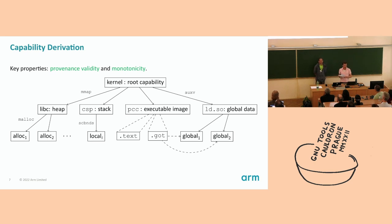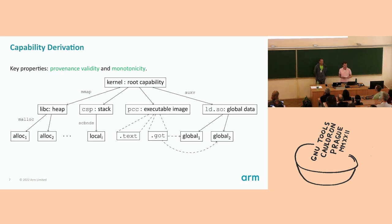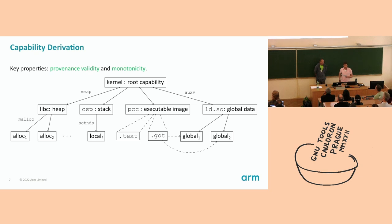For stack variables the situation is slightly different — the compiler actually inserts instructions to narrow the bounds on stack variables. For global variable access on Morello, at startup the kernel grants the dynamic linker capability to the program's data sections. Each global variable then has a capability-sized slot in the GOT, and the dynamic linker populates those GOT slots with an appropriately narrowed capability. The GOT itself can then be accessed with a PCC-relative load. CSP and PCC are just the capability versions of the AArch64 stack pointer and program counter registers.